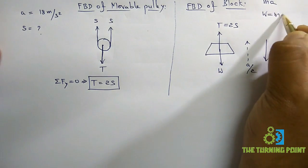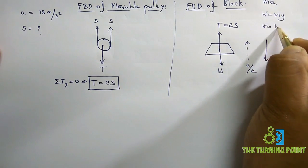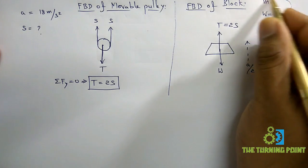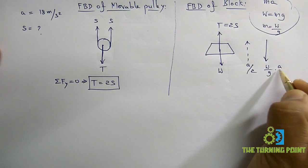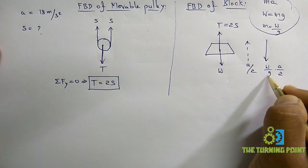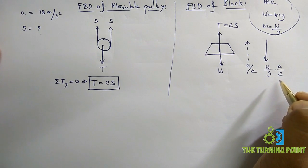Why? Because W equals Mg, from that M equals W by g. So I can write W by g here instead of M. And acceleration is a by 2 here. So W by g into a by 2 is the inertia force here.